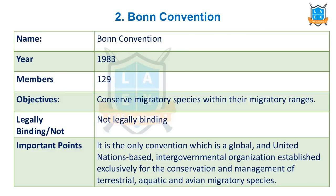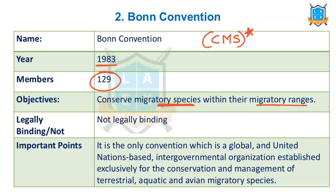The next important convention is the Bonn Convention, which is also called CMS — Convention on Migratory Species. This was ratified in the year 1983. There are 129 member countries. The objective is to conserve migratory species within their migratory ranges. It is not legally binding. Its speciality is that it is the only global convention which covers terrestrial animals, aquatic animals, and avian migratory species — all spheres of species are covered.